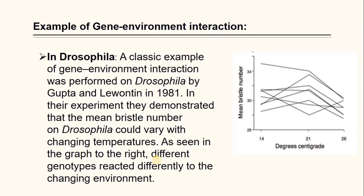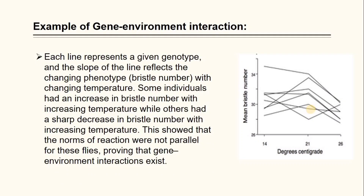The classical example of gene-environment interaction was performed on Drosophila by Gupta and Lewontin in 1981. In their experiment, they demonstrated that the mean bristle number in Drosophila could vary with changing temperature. As seen in the graph on the right, the different genotypes reacted differently to the changing environment. Each line represents a given genotype, and the slope of the line reflects the changing phenotype — bristle number — with changing temperature.